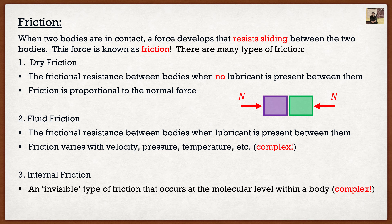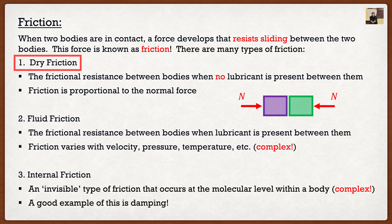The last type is internal friction, which is an invisible type of friction because it occurs at a very small — specifically molecular — level. As you guys know from chemistry, atoms are arranged in particular orders, and when those atoms touch, they create friction. This is the most complex type of friction and still has a lot of research going into it. One example from a structural engineering aspect is damping. In this course, we are going to focus on the simplest one, which is dry friction.